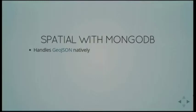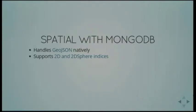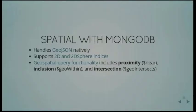As of Mongo 2.4, it handles the GeoJSON format natively. It has support for both 2D and 2D sphere indices — the app I showed uses a 2D sphere index. It also has support for a number of different spatial queries, such as 'what things are near to this thing' and 'what things are within this particular polygon'.